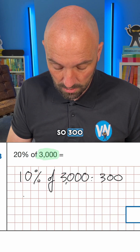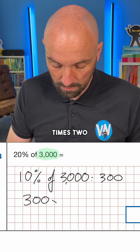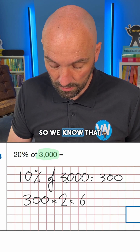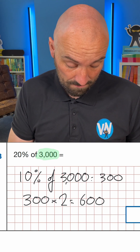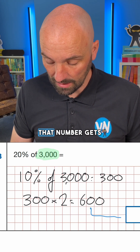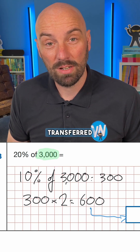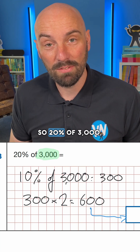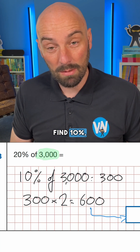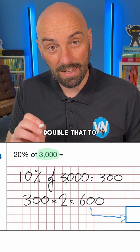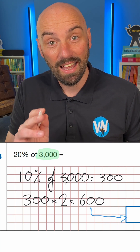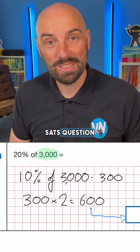300 times 2 is 600, so 600 is 20%, and we need to make sure that number gets transferred into the answer box. So: find 10% which is 300, double that to get 20% which is 600 — and that's another SATs question solved.